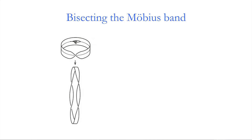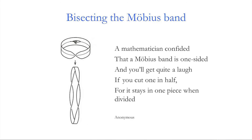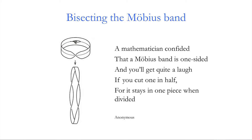This resulting band is like a cylinder in that it has two boundary edges — worth noting that the original Möbius band has only one boundary edge, since if you travel along the edge you return to where you started. After cutting a Möbius band in two you end up with something that has four twists and two boundaries. As the limerick goes: 'A mathematician confided that a Möbius band is one-sided, and you'll get quite a laugh if you cut one in half, for it stays in one piece when divided.'